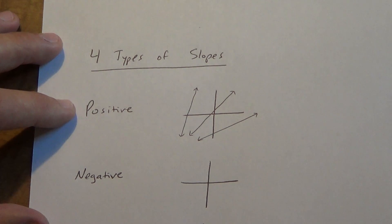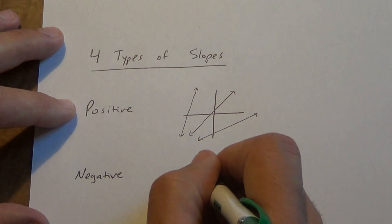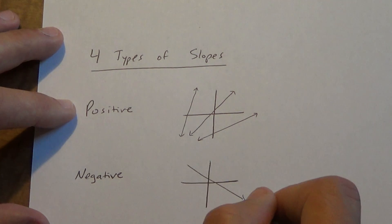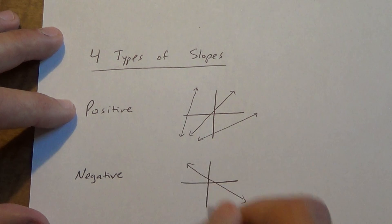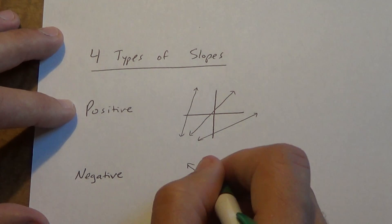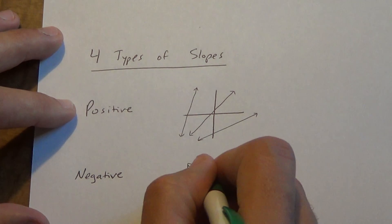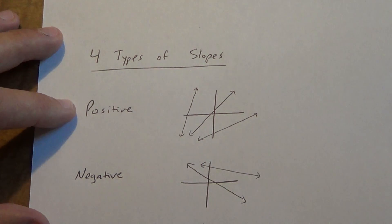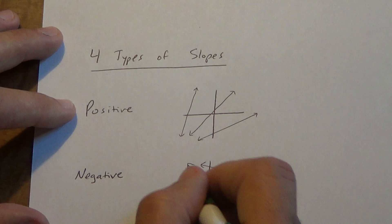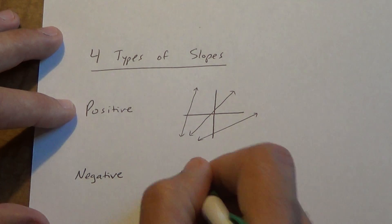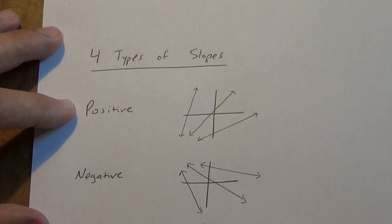A negative slope goes down to the right instead of up to the right. It might be a little bit flatter or a little bit steeper, but any line going down to the right is considered to have a negative slope.